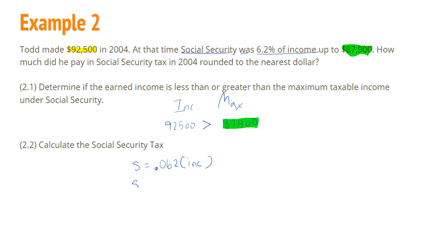All right. So our tax is equal to 0.062 of my income. Now remember, I have to use the $87,900 because I'm over the maximum income. My income is over, so I got to use this one.